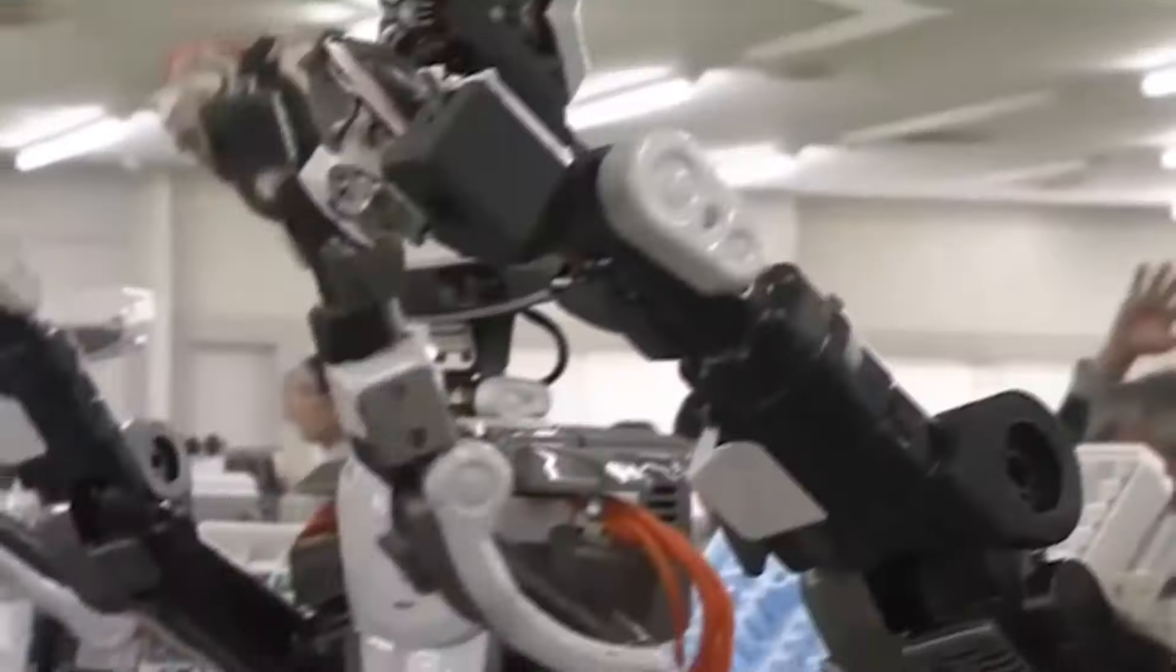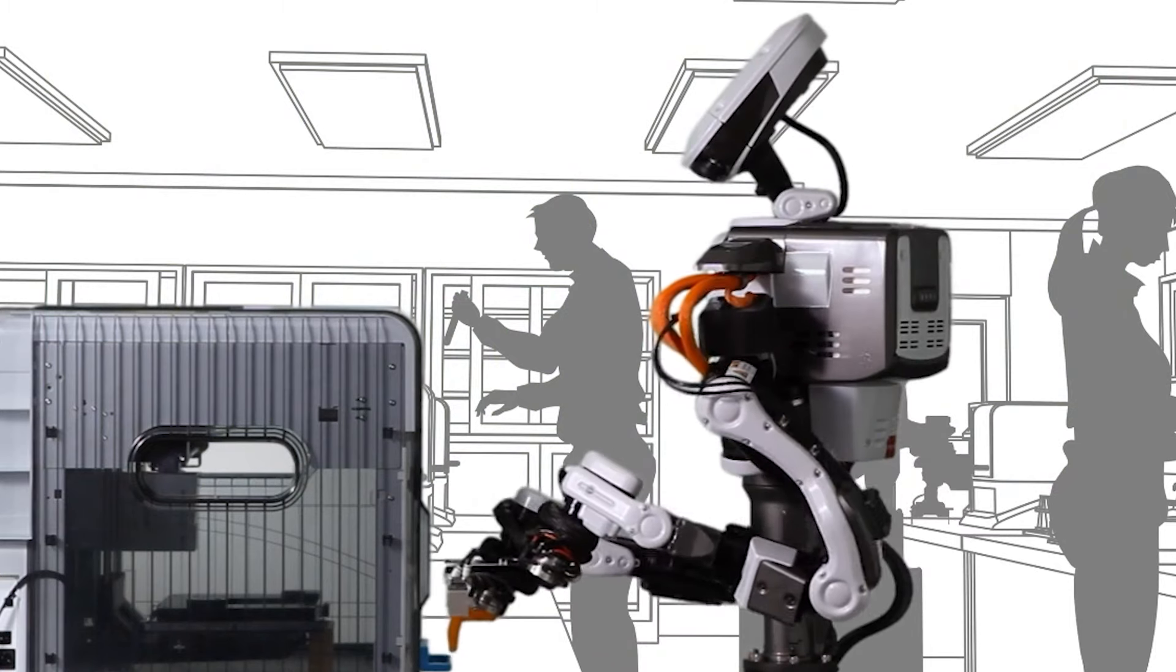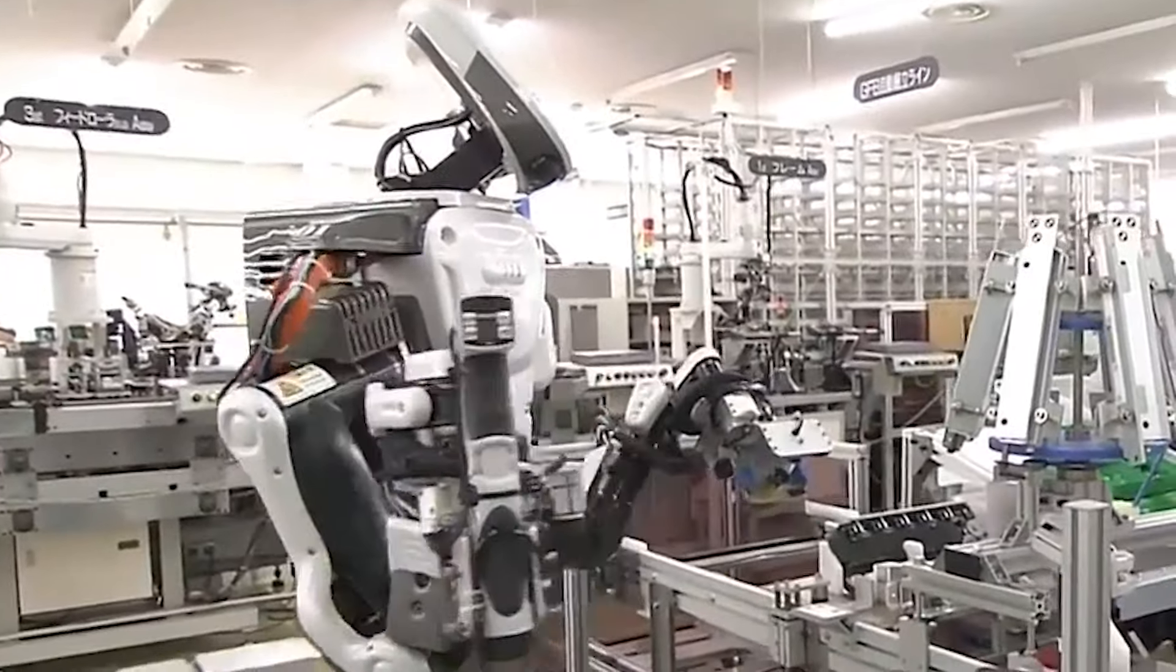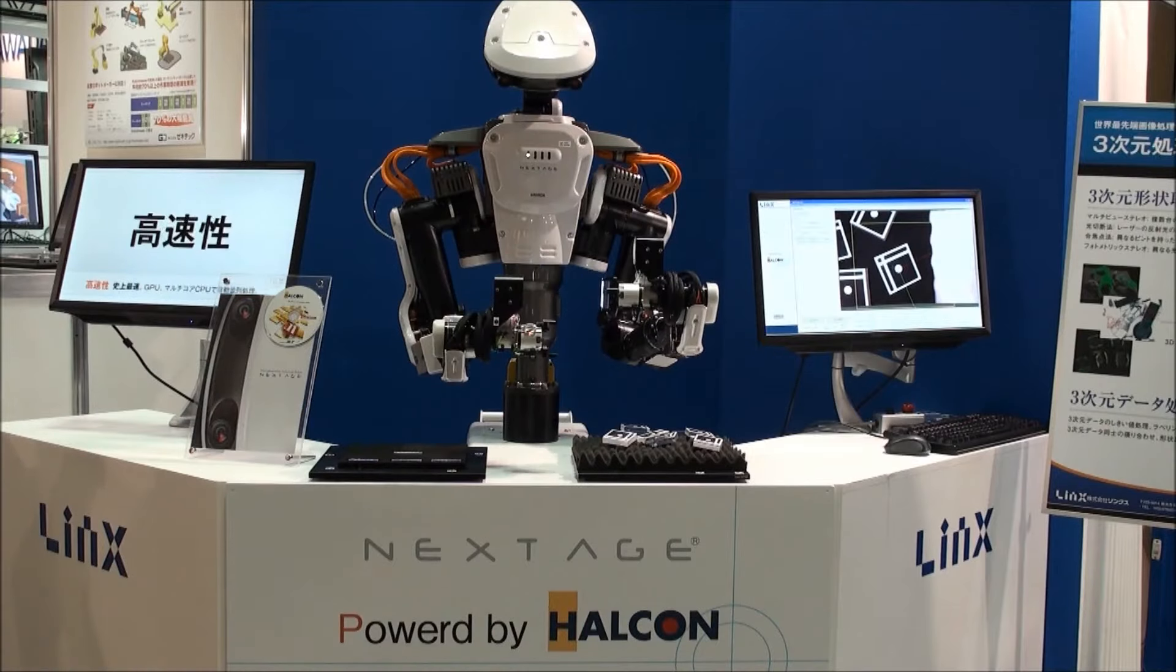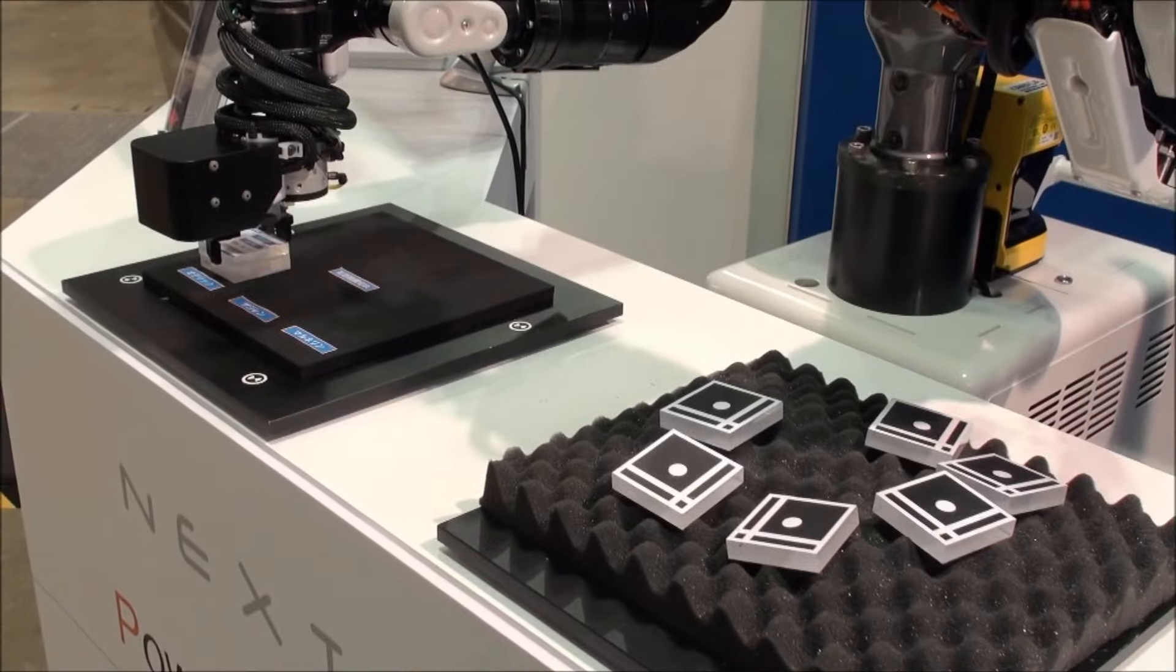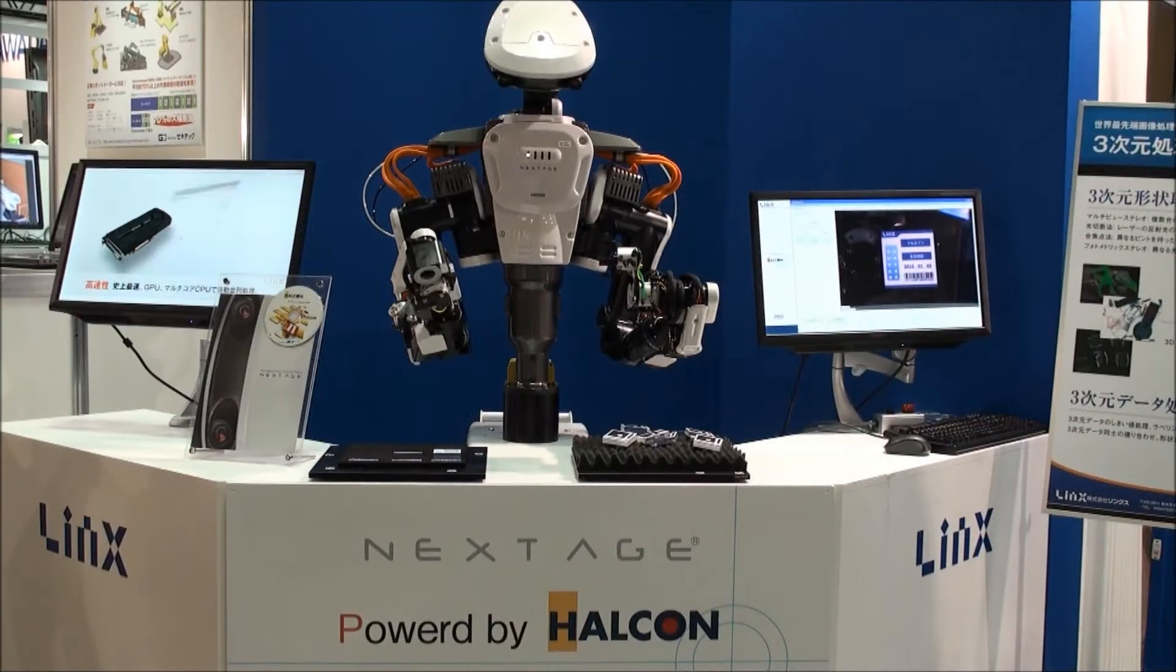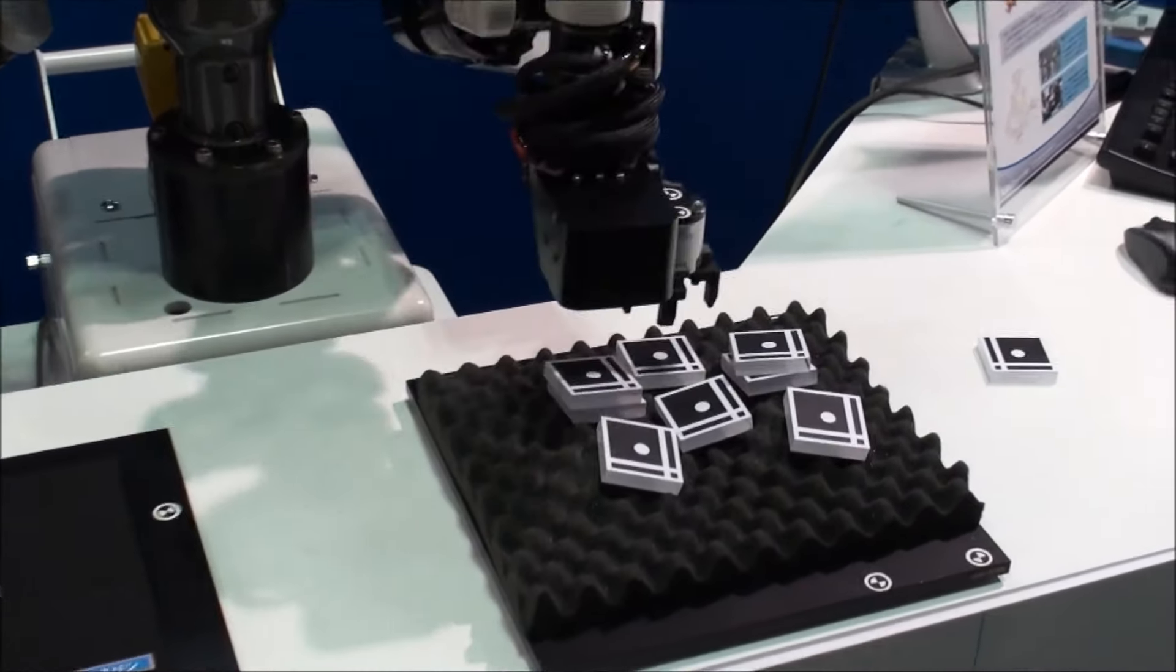Welcome to the future of manufacturing with Nextage, the amazing humanoid robot built for industrial tasks. With its special design featuring two arms and super accurate motion control, Nextage is like a superstar on the production line. Nextage is really good at putting things together. It can assemble all sorts of parts and pieces with ease. Plus, it's great at checking if everything is made correctly, it's like having a super inspector right on the factory floor.